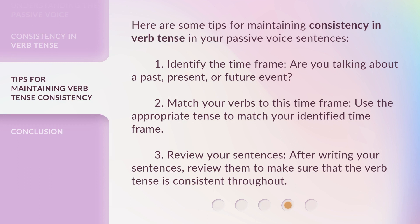Here are some tips for maintaining consistency in verb tense in your passive voice sentences. 1. Identify the time frame — are you talking about a past, present, or future event? 2. Match your verbs to this time frame; use the appropriate tense to match your identified time frame. 3. Review your sentences — after writing them, review to make sure that the verb tense is consistent throughout.